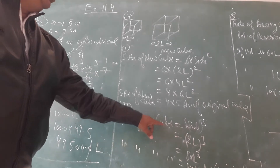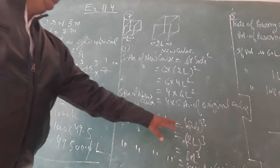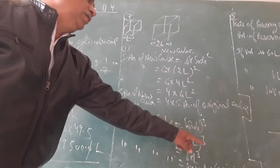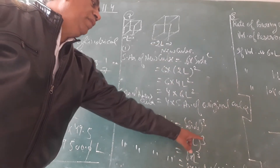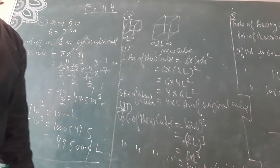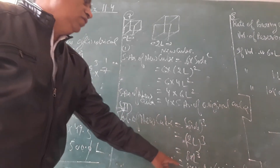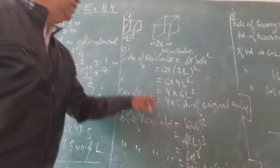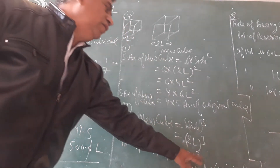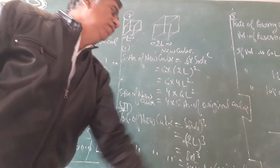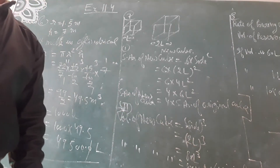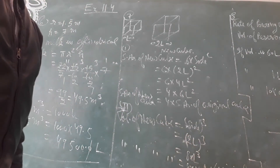What will be the volume of the new cube? Using the formula side cubed: the new cube has side 2L, so volume = (2L) cubed = 8 times L cubed. Since L cubed is the volume of the original cube, the volume of the new cube is 8 times the volume of the original cube.